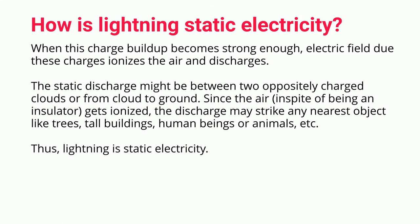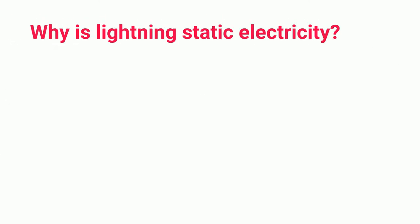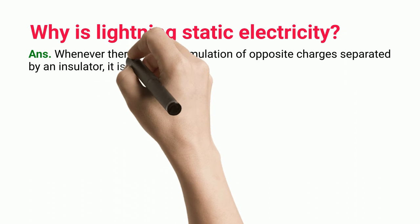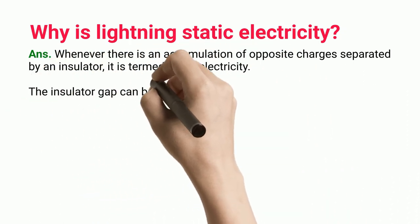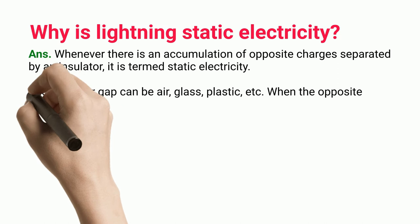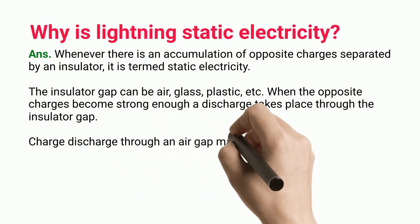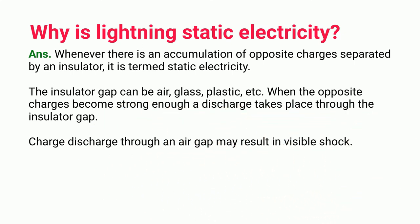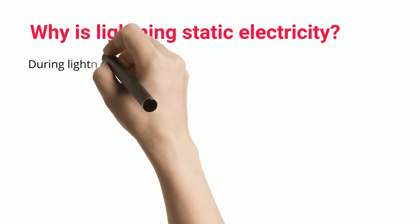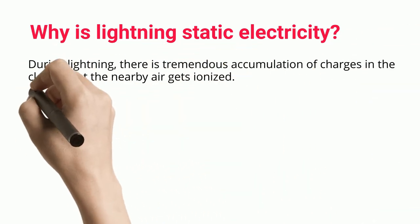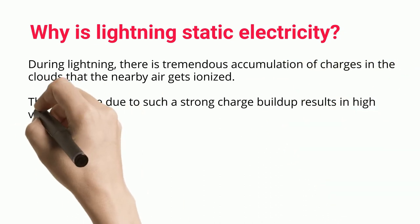Thus, lightning is static electricity. Whenever there is an accumulation of opposite charges separated by an insulator, it is termed static electricity. The insulator gap can be air, glass, plastic, etc. When the opposite charges become strong enough, a discharge takes place through the insulator gap. Charge discharge through an air gap may result in a visible shock. During lightning, there is tremendous accumulation of charges in the clouds and the nearby air gets ionized.